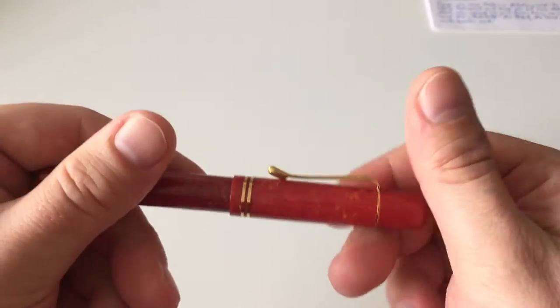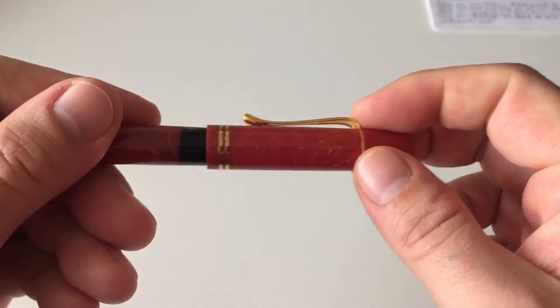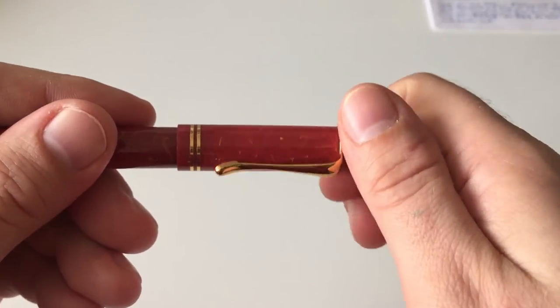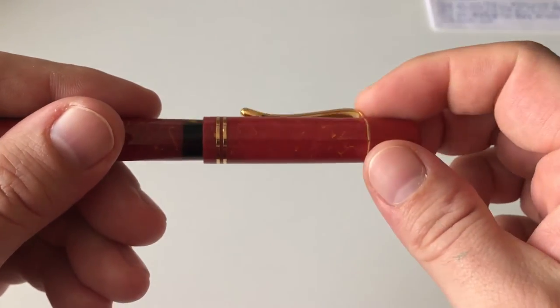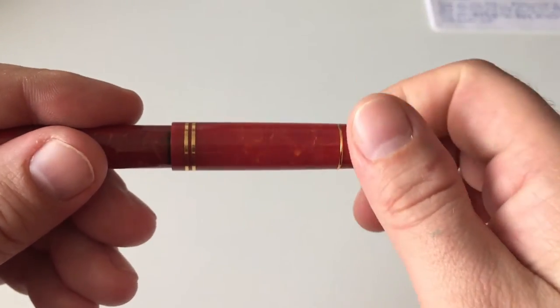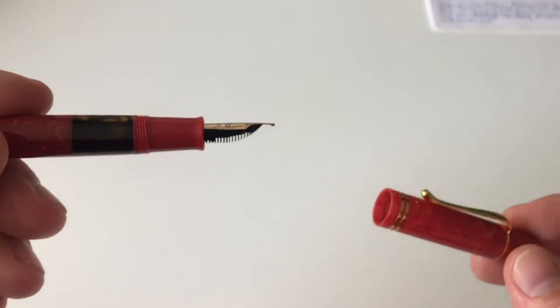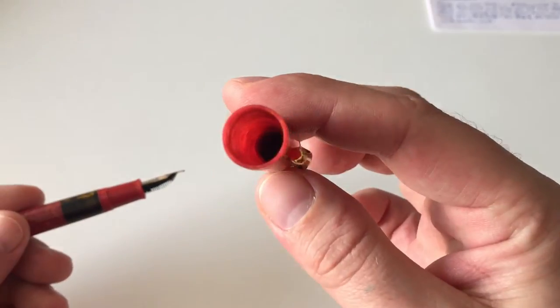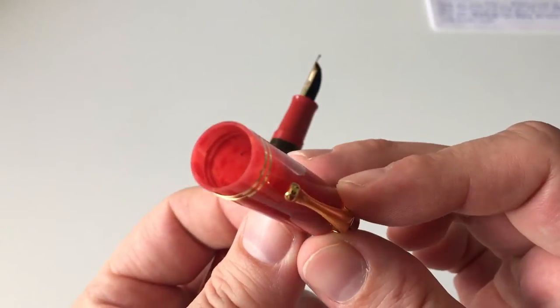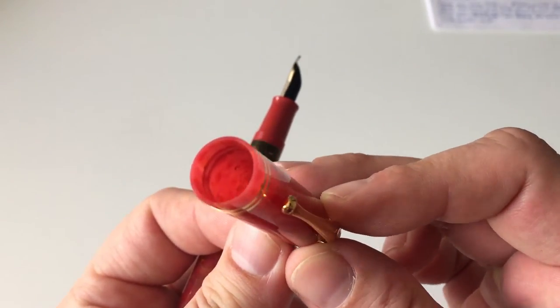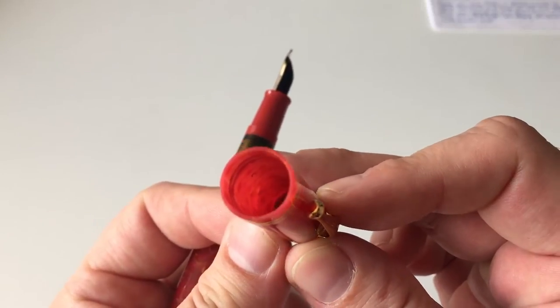Something really nice about Pelikan pens that I like a lot: they make really nice quick note-takers because they uncap with a bit less than three-quarters of a turn, half a turn to three-quarters of a turn, and you get the cap off.